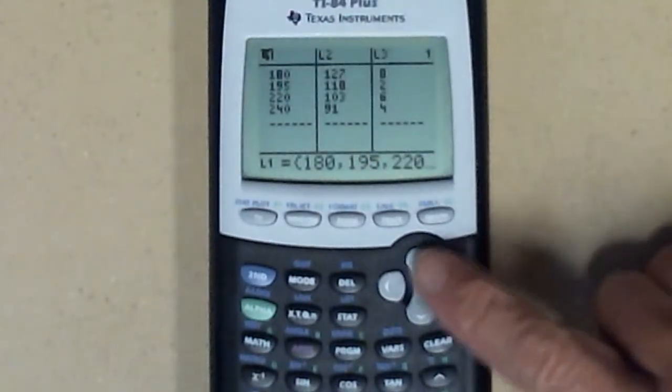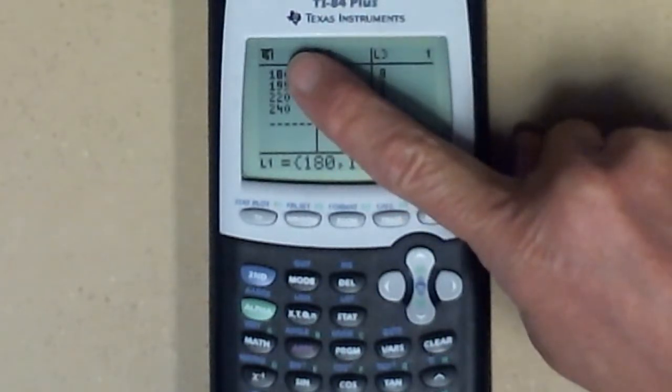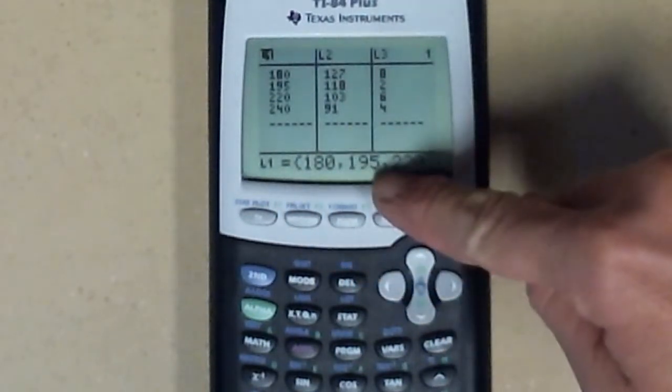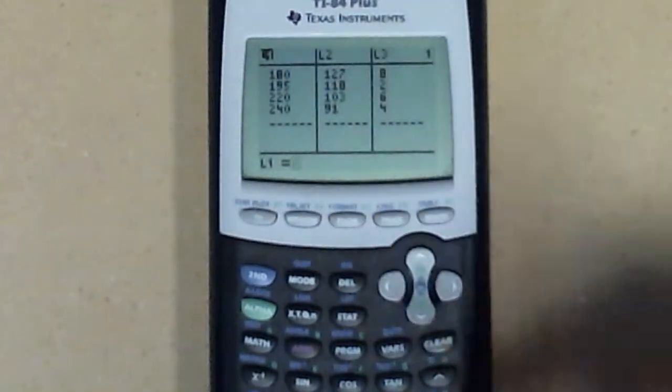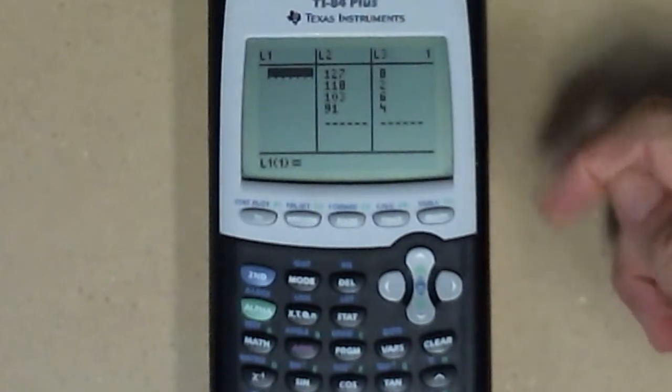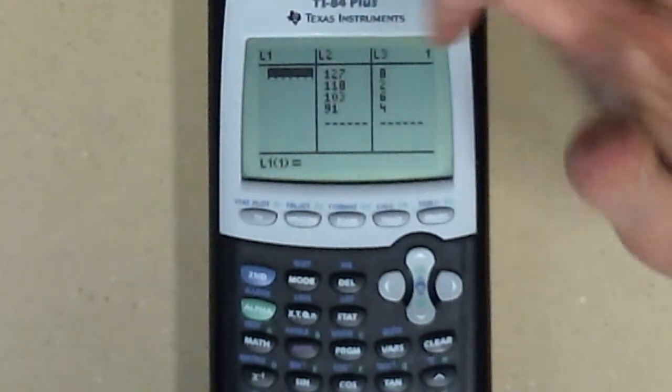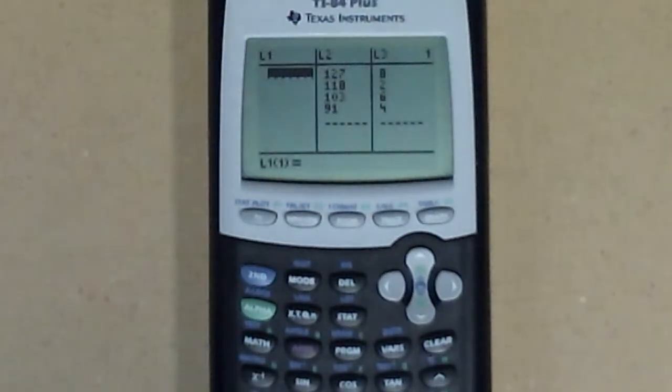Did you see what I did? I did that fast. I used these arrow buttons to get up on the top line. Notice I'm highlighted above L1. Down here you can see they have all those data values in L1 listed. So while I'm up here I'm going to hit the clear button. Notice they're gone. Then I'm going to hit enter. I have a nice clean column to put all those data values in.